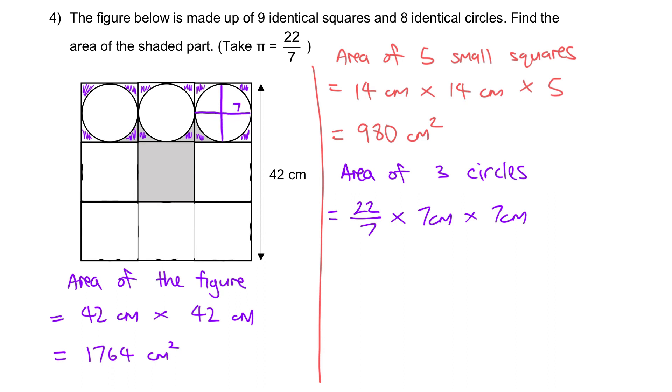So this is the radius, 7, and this is one circle, so we need to times 3. The answer will be 462 cm squared.